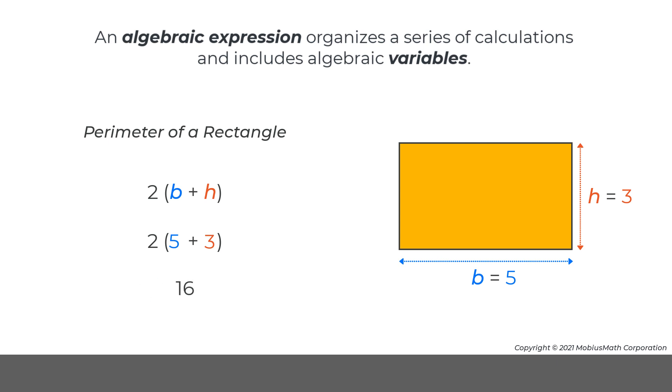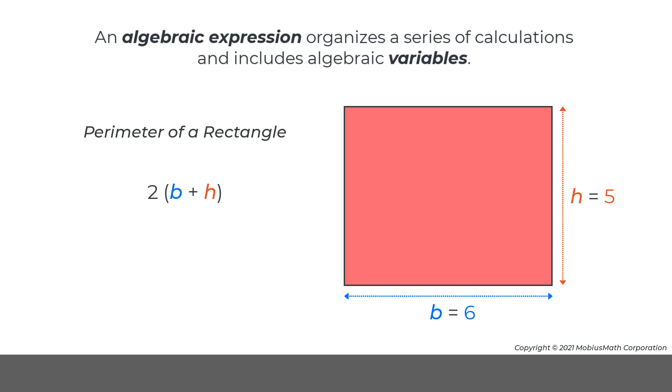So, a rectangle with a base of 5 centimeters and a height of 3 centimeters has a perimeter of 16 centimeters. Note, the original algebraic expression can be evaluated for different values of b and h. Each of these calculations represents the perimeter of a different rectangle.